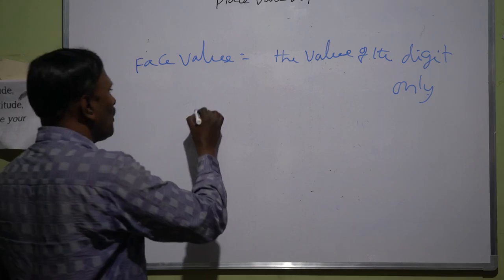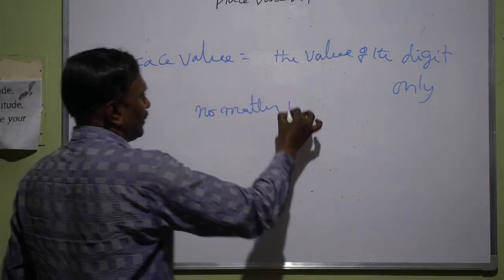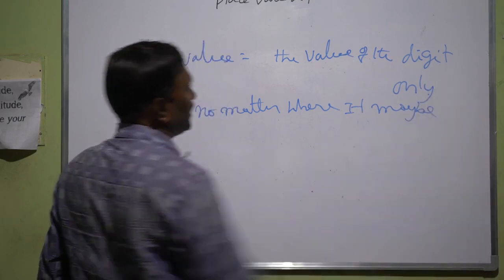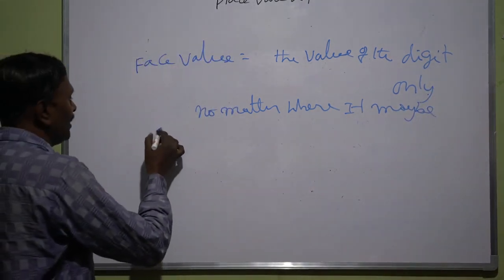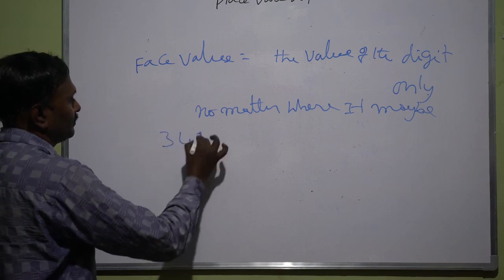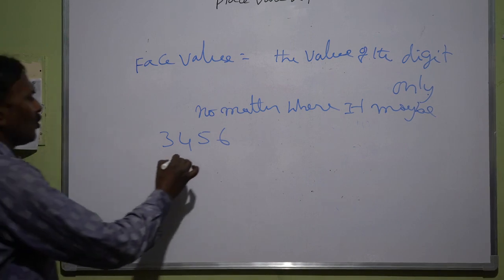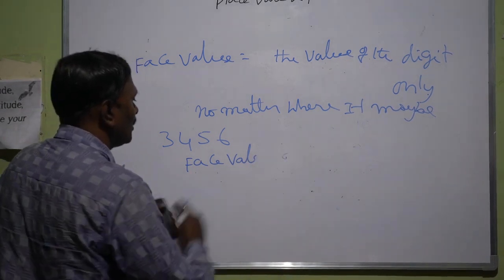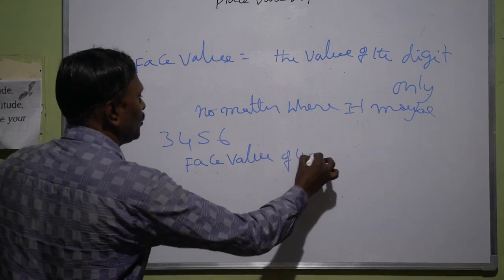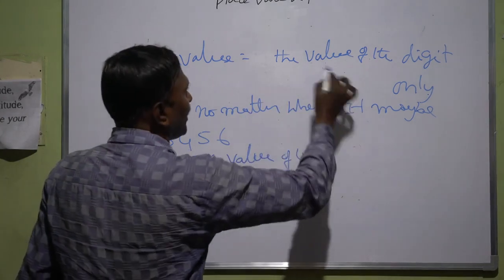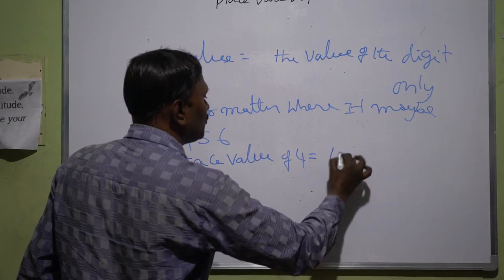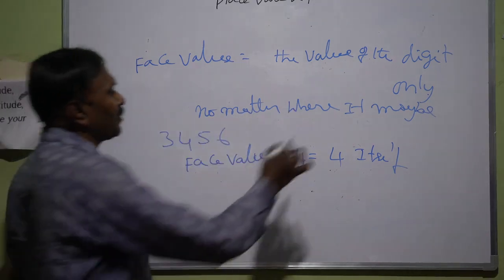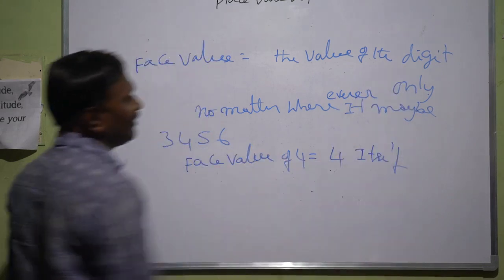We should remember — no matter wherever it may be. We will discuss with one example. If anybody asks, what is the face value of 4? The face value of 4 is equal to — the face value is the value of the digit only. It means the face value of 4 is 4 itself. No matter wherever its position, the face value of 6 is 6 itself.